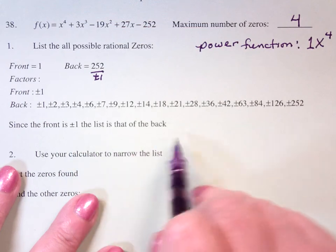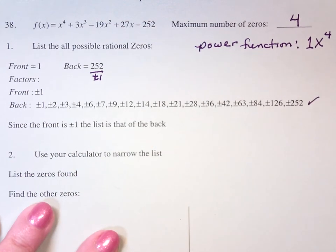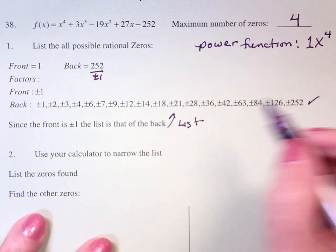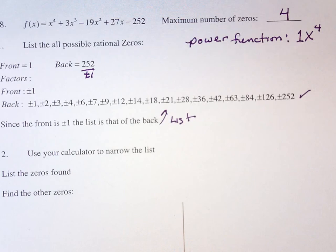And since the front is plus or minus 1, this is your list. And then, of course, what do we do? We use our calculators to narrow the list.